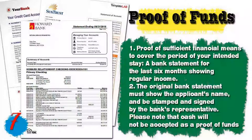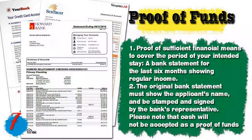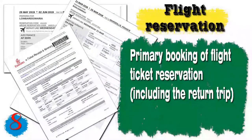Number six: for foreigners not applying in their country of citizenship, you must provide the original and photocopy of your valid certificate of residence, employment or student status, or other valid certificates of legal stay issued by the relevant authorities of the country where the visa center is located. Number seven: you will need proof of sufficient financial means — a bank statement for the last six months showing regular income, stamped and signed by the bank's representative.